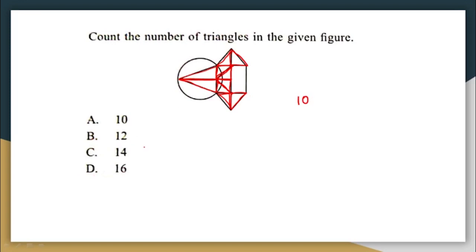Are those the only triangles? No, there are some bigger triangles also. I'm going to mark the bigger triangles using green color. This is the 11th triangle, the big triangle here. This is the 11th one and this is the 12th one, 13th one, and the 14th one. So in total, 10 plus 4 — there are 14 triangles altogether. The correct answer is option C: 14.